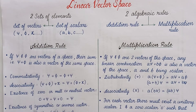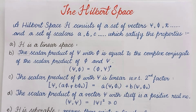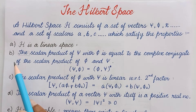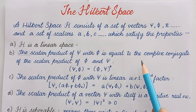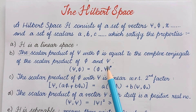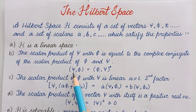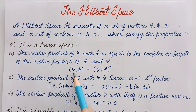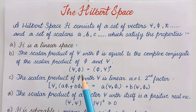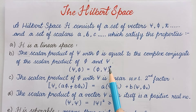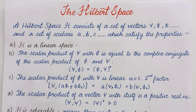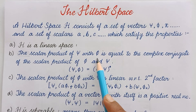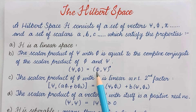It was important to understand the linear vector space before understanding the Hilbert space. Now, coming to the second property: the scalar product of psi and phi equals the complex conjugate of the scalar product of phi and psi. So it is not simply commutative; the scalar product of psi with phi equals the complex conjugate of the scalar product phi and psi.